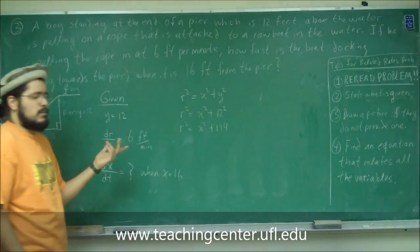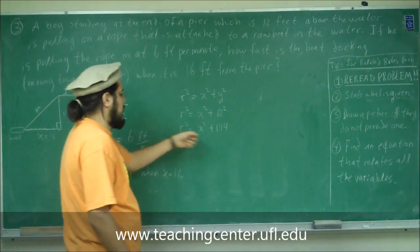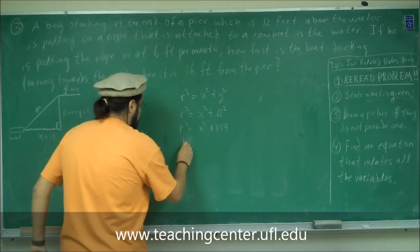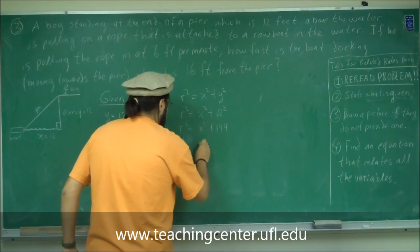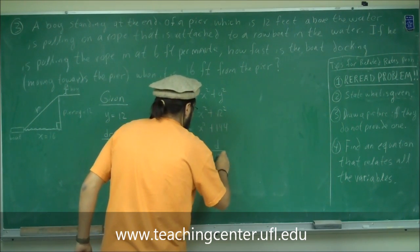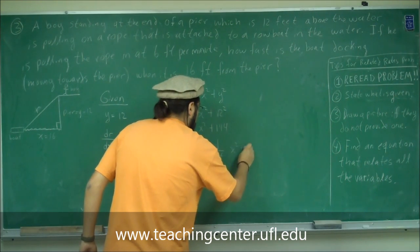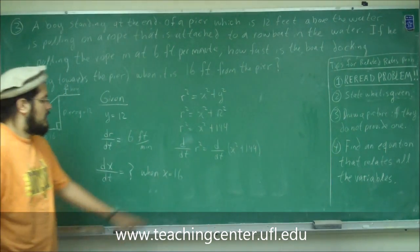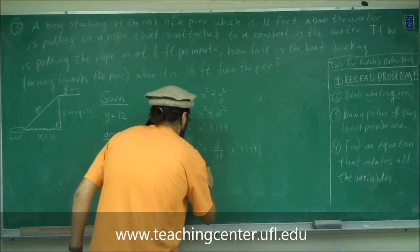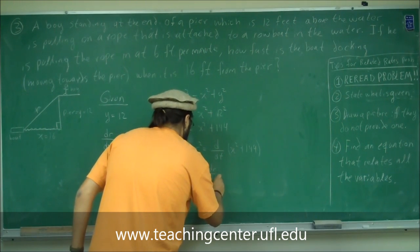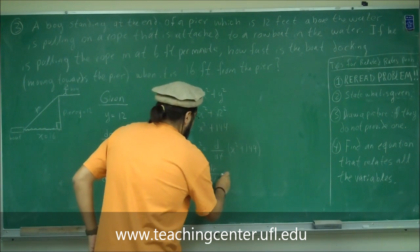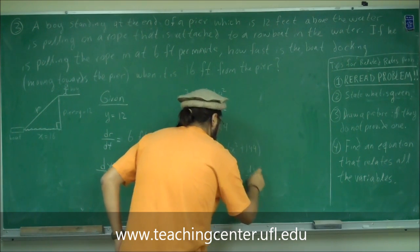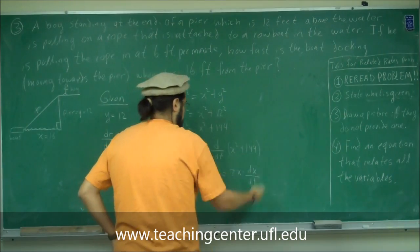In our related rates problem, we want to take the derivative of both sides with respect to time. Taking d/dt of R² gives 2R times dr/dt, since R is not t. And on the right side, 2X times dx/dt. The derivative of the constant 144 is zero, so plus zero.